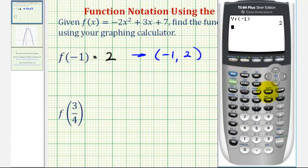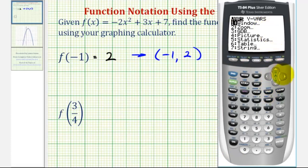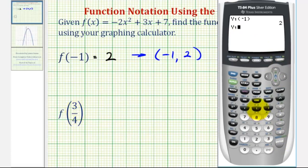We want to enter Y1 again. So we'll press VARS, right arrow, ENTER, ENTER. And then in parentheses, 3/4. So open parenthesis, 3 divided by 4, close parenthesis, ENTER.